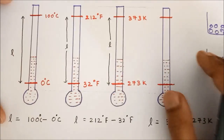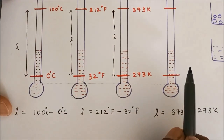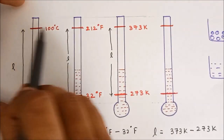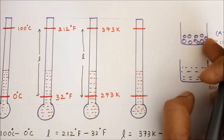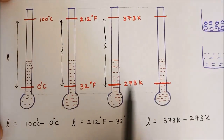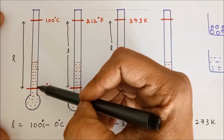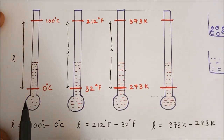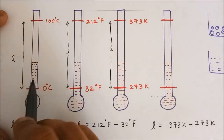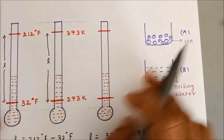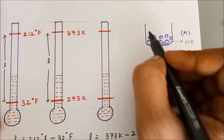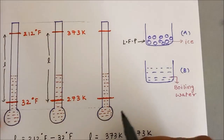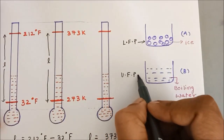Let us understand what we have done till now. When we dip all 4 equally filled mercury identical containers into boiling water, the mercury level goes up here, and if we put them in ice, the mercury level goes down and comes here. This length L is the length by which the mercury went up or down, and it is the same in all cases because the containers are identical and the same liquid is filled in all 4. This is called the lower fixed point of the thermometer and this is called the upper fixed point of the thermometer.